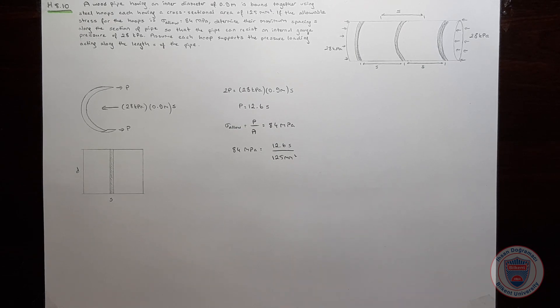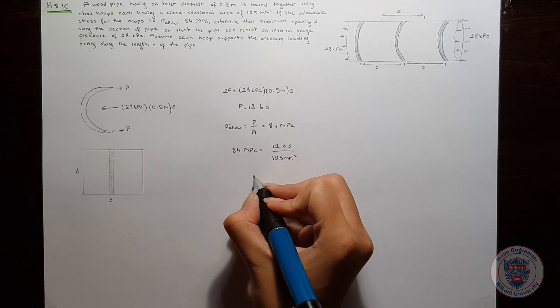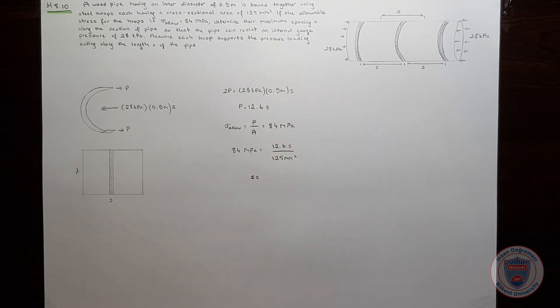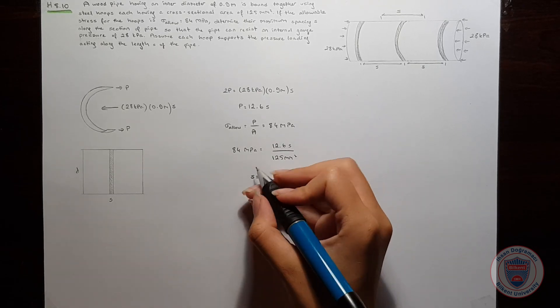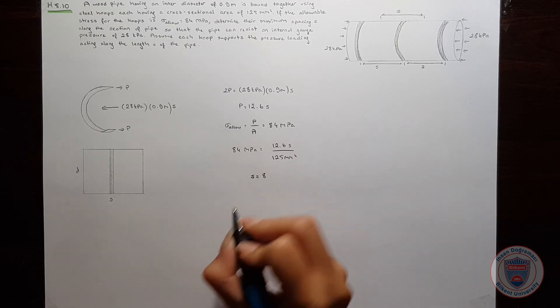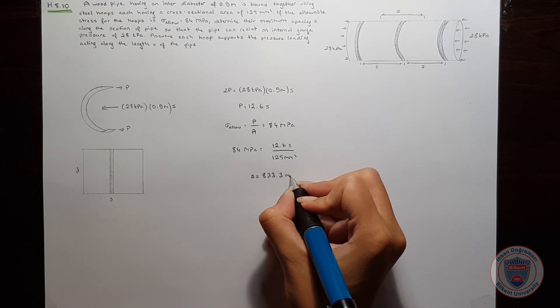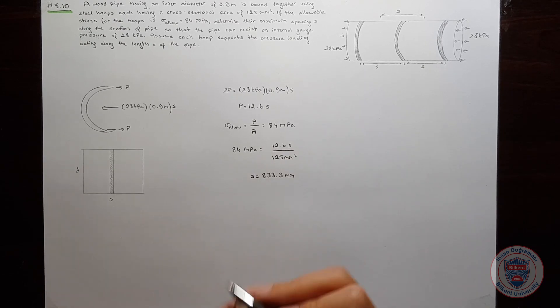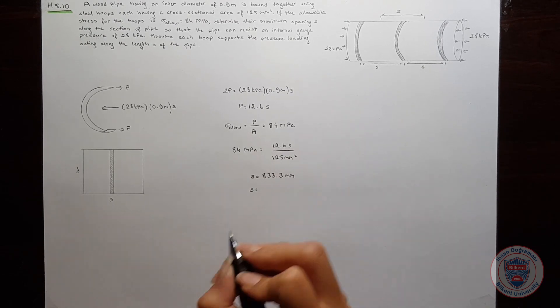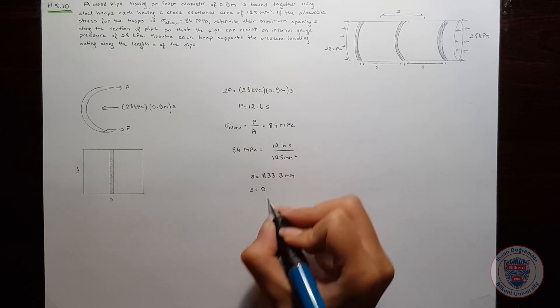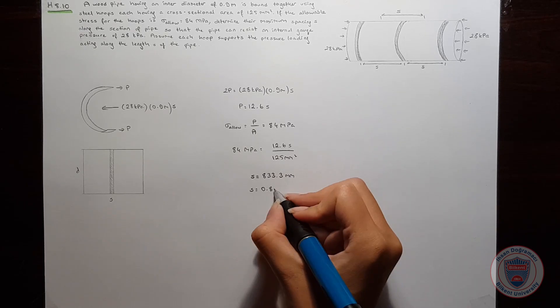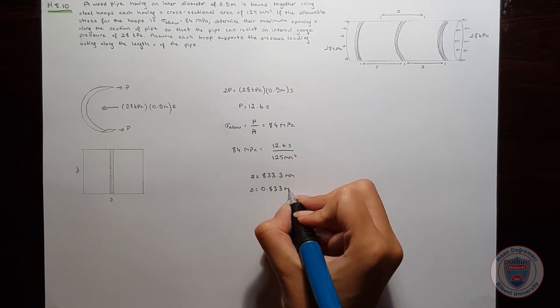When we compute this equation, we get S equals 833.3 millimeters. We can also write this as S equals 0.833 meters.